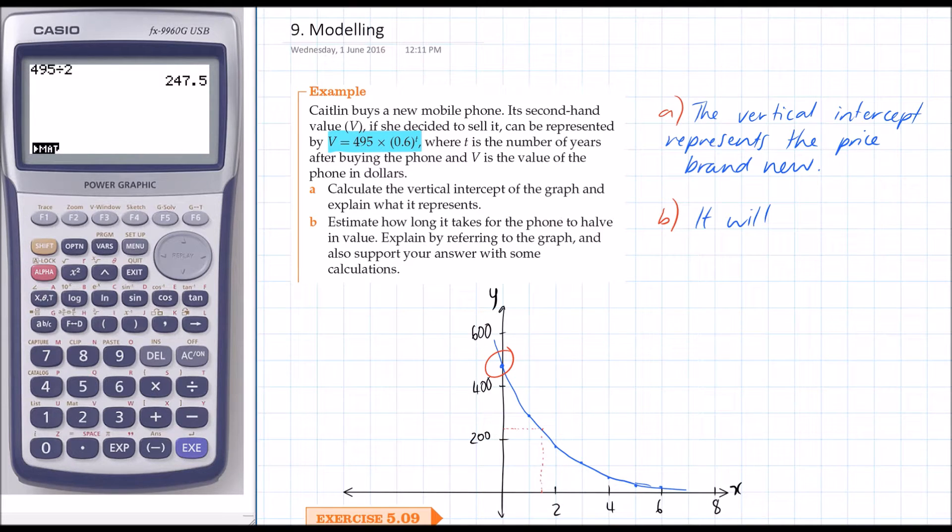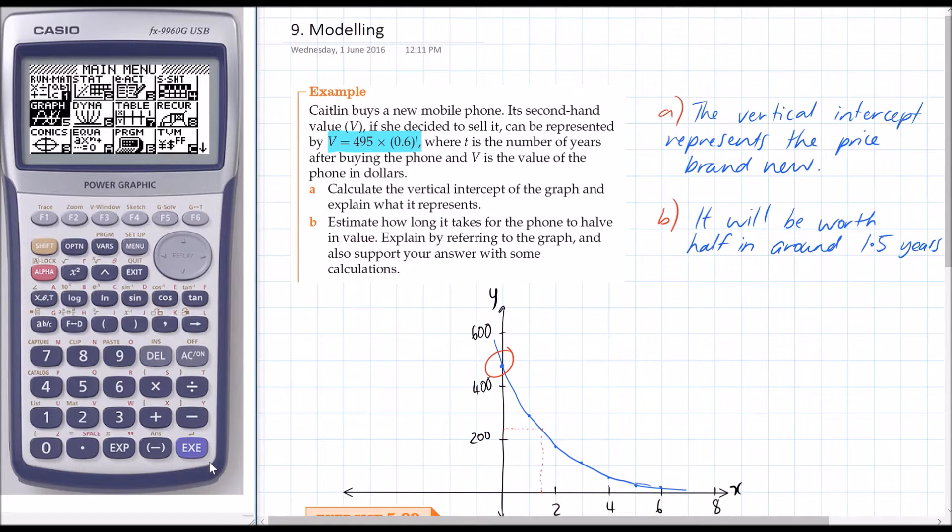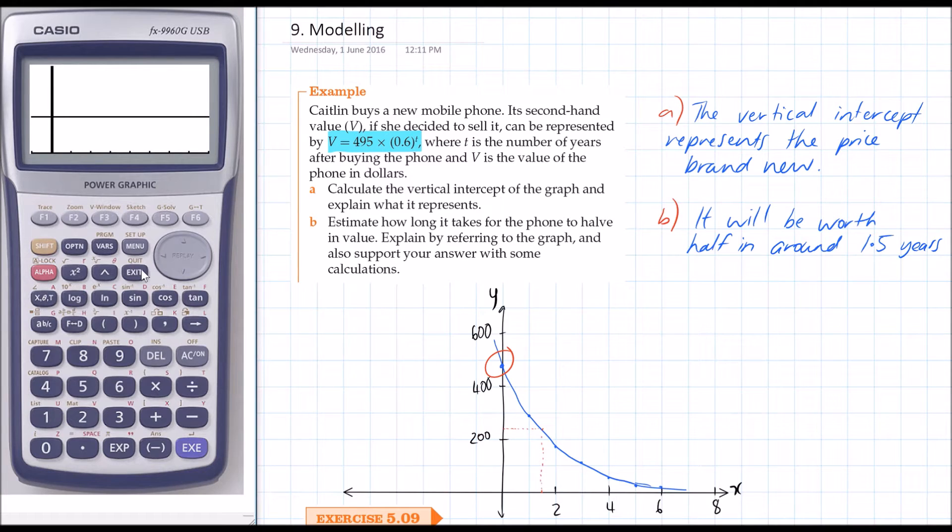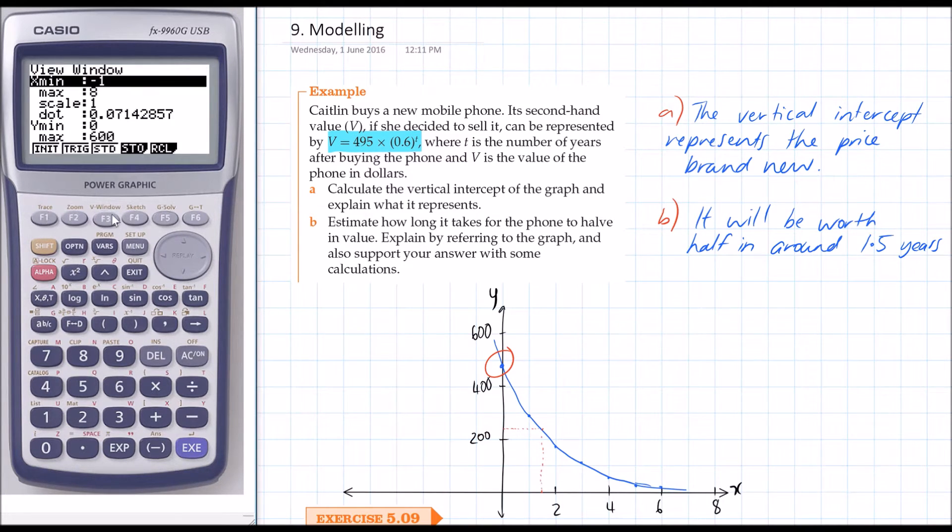And just out of interest, we could use our graph to look at this as well. So we could put 247.5 into our graph and what's happening here, viewing window.